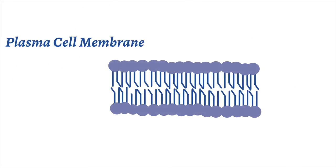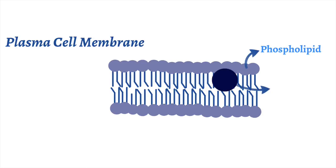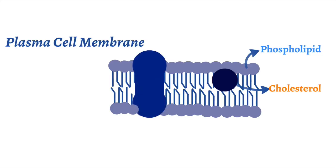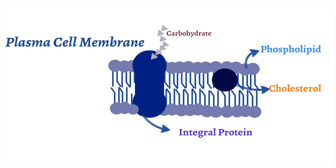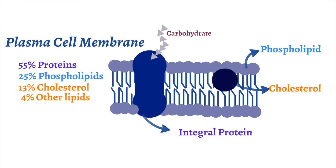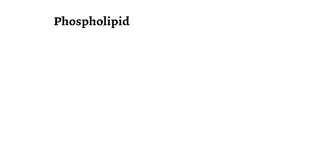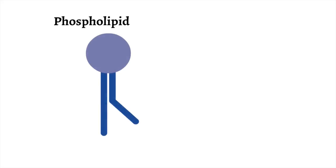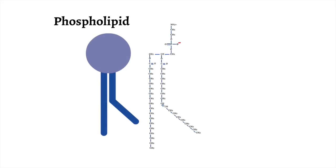The cell membrane is composed of a bilayer of phospholipids oriented in opposite directions. The phospholipid bilayer contains cholesterol deposits, proteins, and carbohydrates as part of the mosaic that makes up the cell membrane. In fact, 55% of the plasma membrane is composed of proteins, 25% phospholipids, 13% cholesterol, 4% other lipids, and 3% carbohydrates. To understand the structure and unique properties of the plasma membrane, we need to understand the basic components of the membrane, which is the phospholipid.